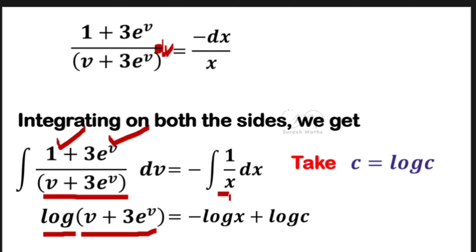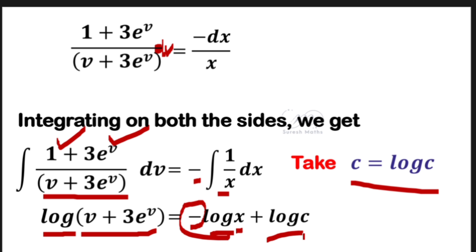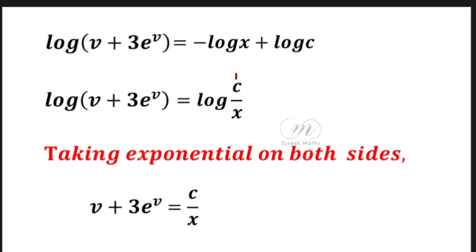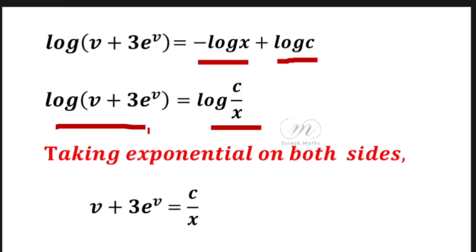Similarly, integrating dx/x gives log x. The right side is minus log x. Adding the constant as log c, we have log(v plus 3e^v) equals minus log x plus log c. Using log m minus log n equals log(m/n), this becomes log c/x.